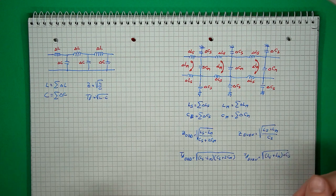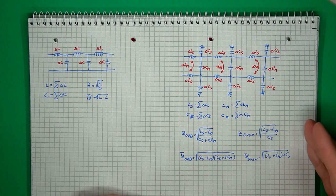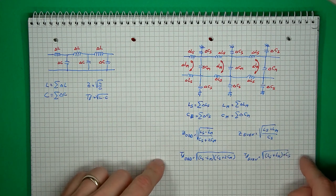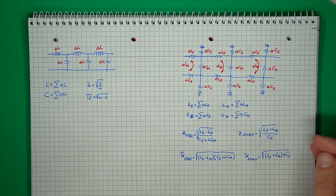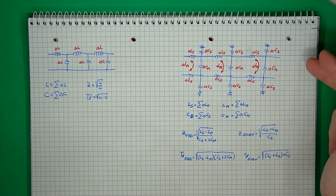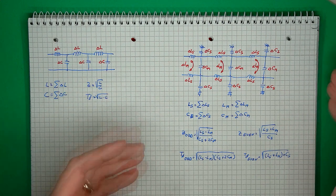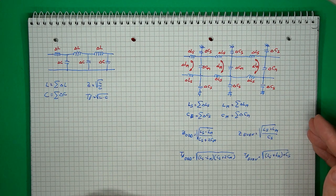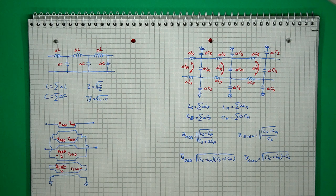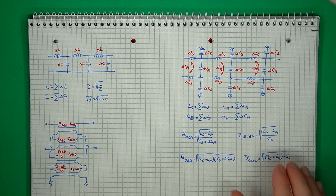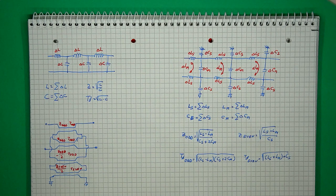You get different impedances — this is to be expected — but what I personally found interesting is that the propagation delay can also be different. The time it takes for the common mode signal to pass through the structure is not the same as the time it takes for the differential signal to travel. And this is where the four-transmission-line structure is superior: it allows easy modeling of all four of these parameters — not just the impedance, but also the propagation delay — and it does so in a very clear fashion.